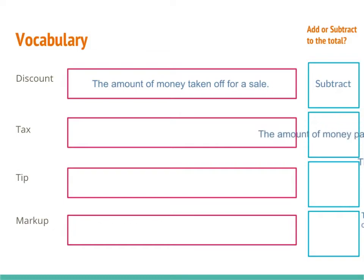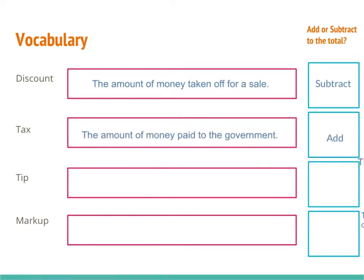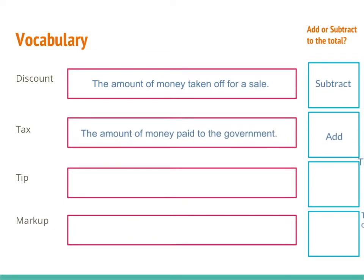Tax is the amount of money paid to the government, and this is an add — we're going to add that to our bill. So whenever you buy something and you have sales tax, you're going to be paying a portion of that amount to the government, and we add that to the amount.